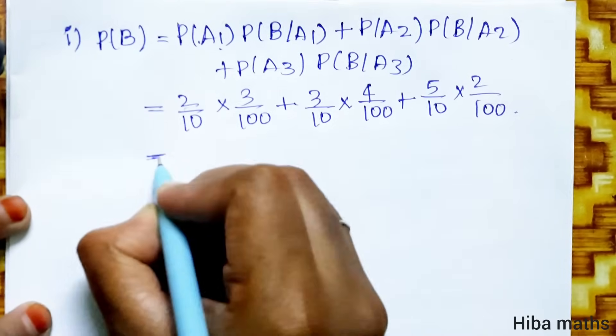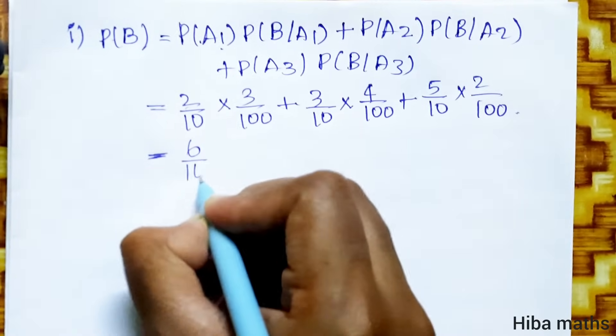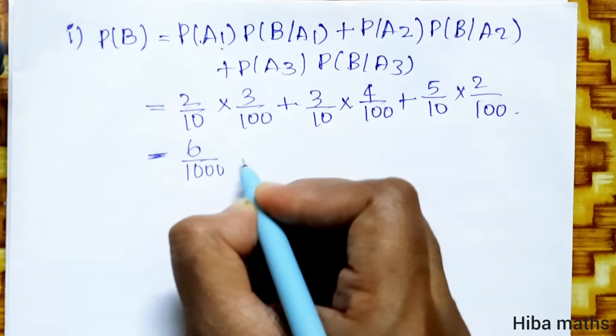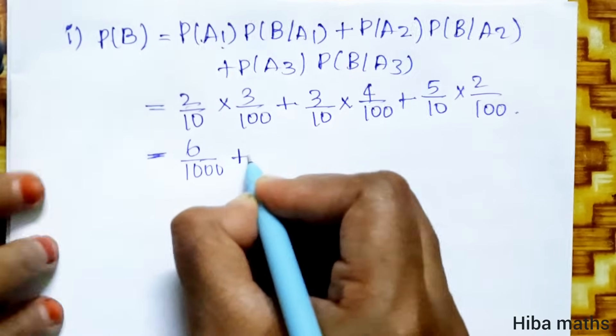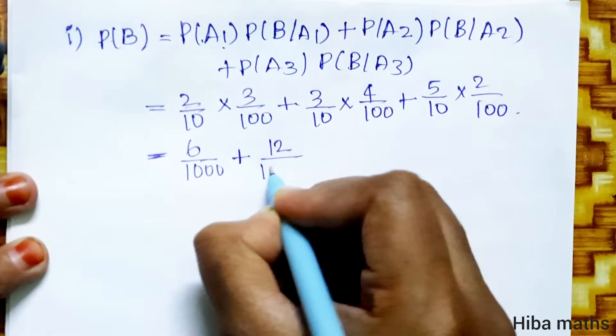Next line, 2 times 3 is 6 by 1000, plus 3 times 4 is 12 by 1000.